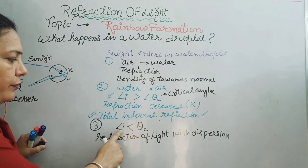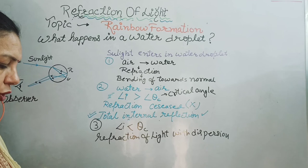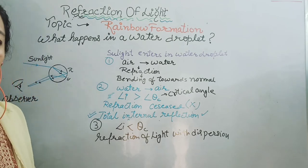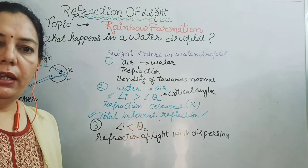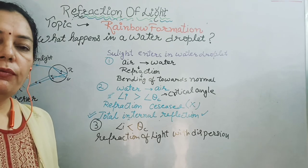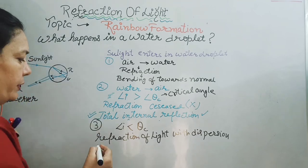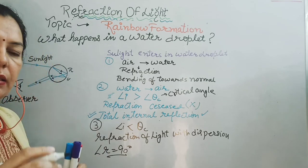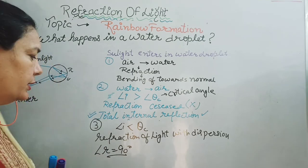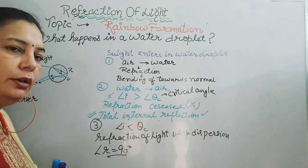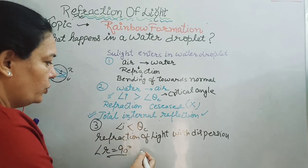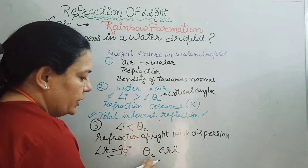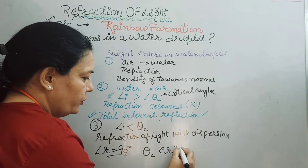At this time the angle of incidence is less than the critical angle. One point to keep in mind: what is the critical angle? The critical angle is the minimum value of the incident angle for which the angle of refraction is 90 degrees. The value of the incident angle for which the angle of refraction becomes 90 degrees is called the critical angle, and its symbol is theta C — C stands for critical.